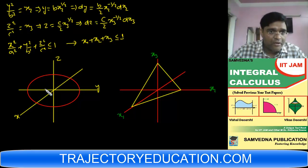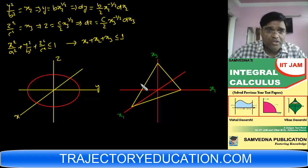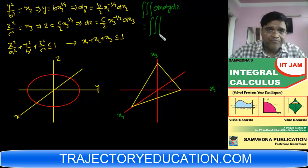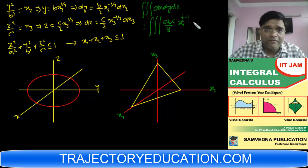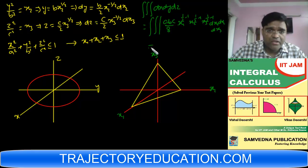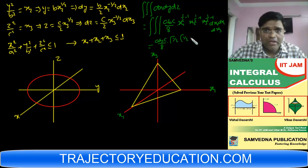By Dirichlet's theorem, you will be able to find the triple integral only over one octant. Since the region is symmetric, the triple integration over the whole ellipsoid will be eight times the triple integration over one octant. So, let me put all these things in the integral. The integral dx dy dz will convert to (abc/8) · x1^(-1/2) · x2^(-1/2) · x3^(-1/2) dx1 dx2 dx3. This becomes (abc/8) with m1 = 1/2, m2 = 1/2, m3 = 1/2.